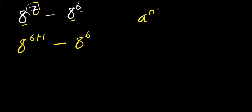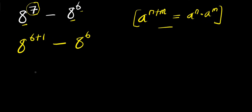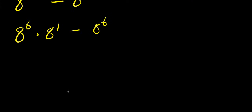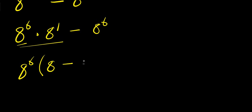If you have 8 power n plus n, this equals 8 power n times 8 power n. I apply this rule right here: 8 power 6 times 8 power 1 minus 8 power 6. The next thing we are going to do is factor out 8 power 6.